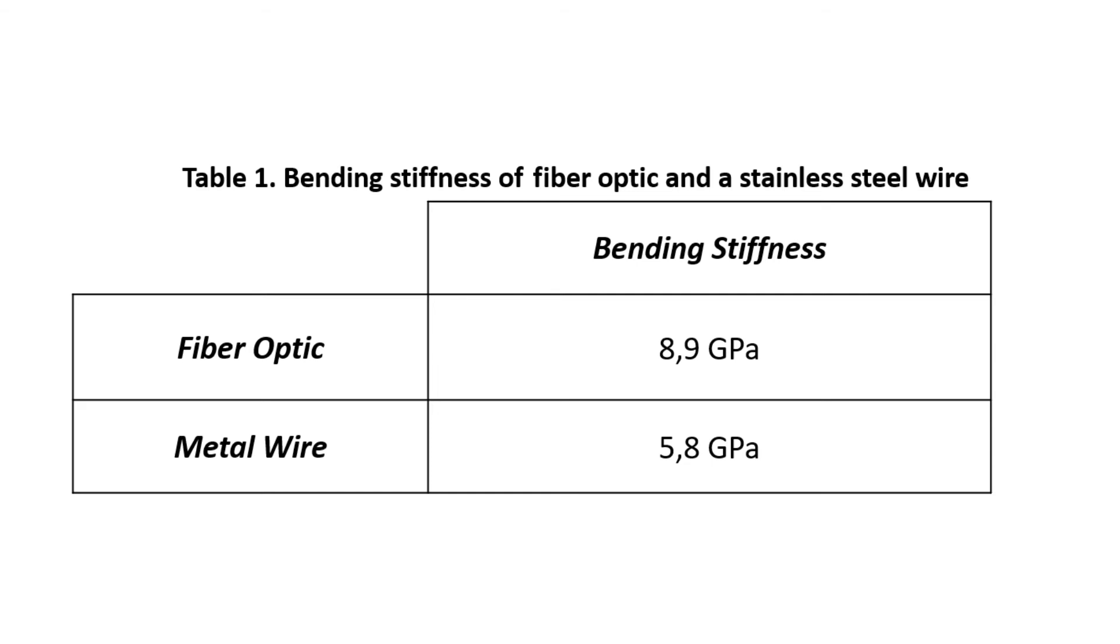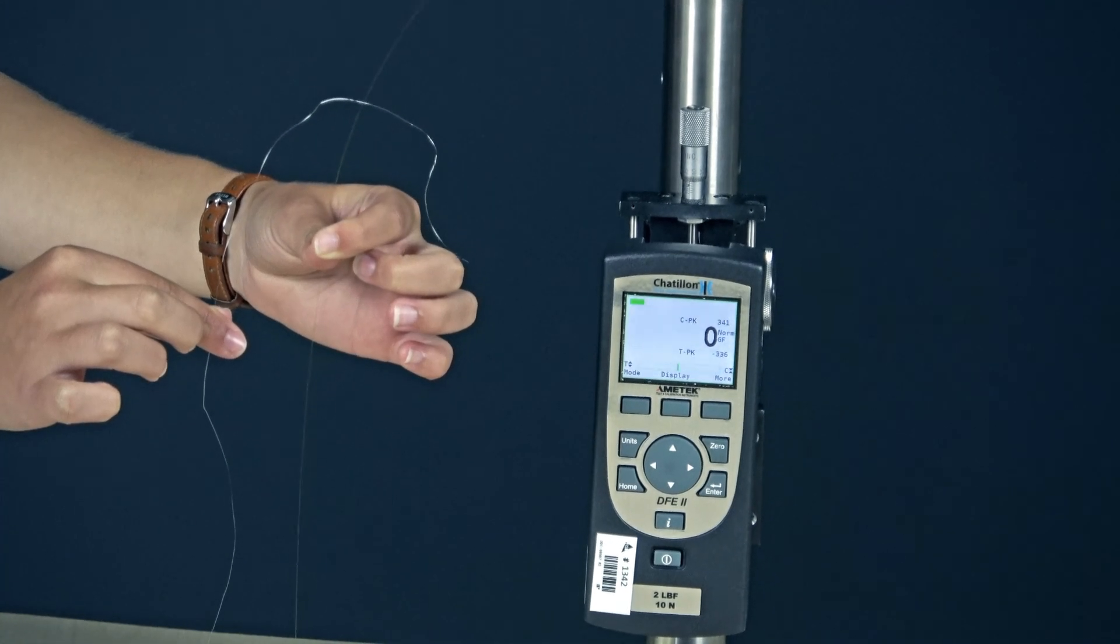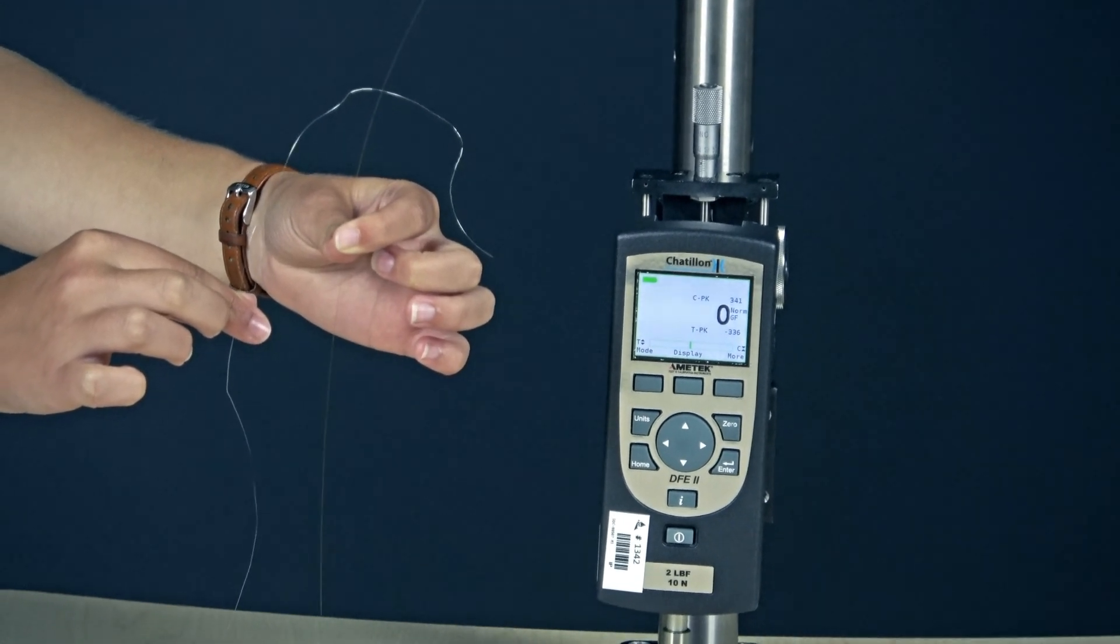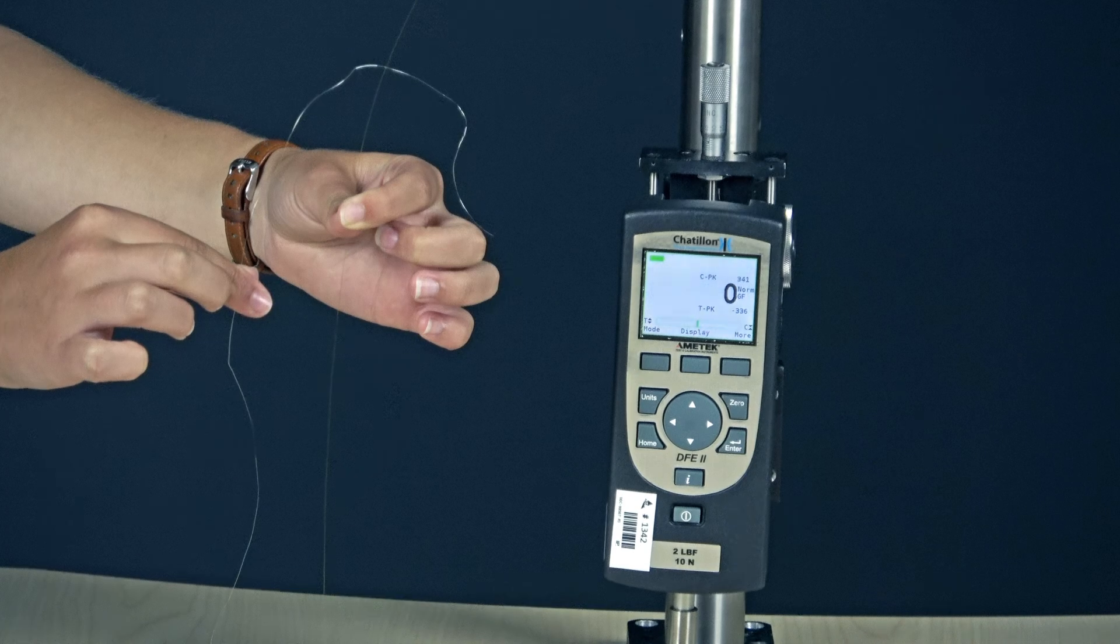The flexural modulus of metal wire is smaller than for the fiber optic as we can see on this table. The metal wire reaches plastic deformation quickly compared to fiber optic that stays in its elastic state. The fiber optic is more resistant to bending deformation.